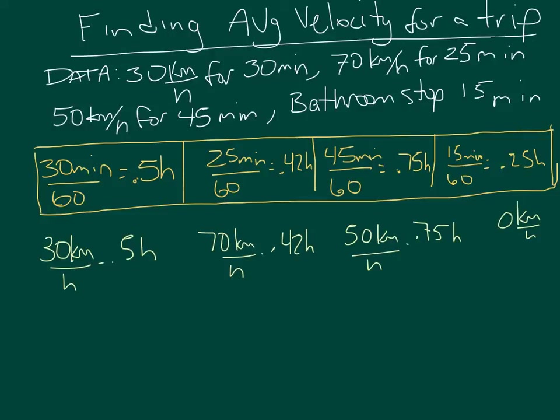Now I'm going to figure out how far they went during each of these time periods. If you go 30 kilometers per hour for half an hour, 30 times half is 15 kilometers.